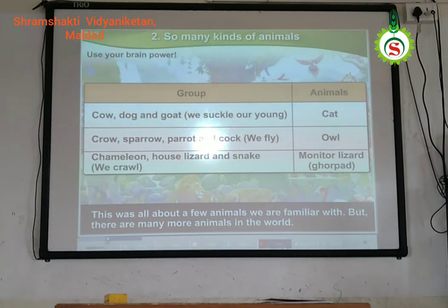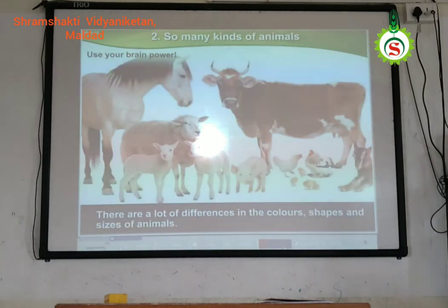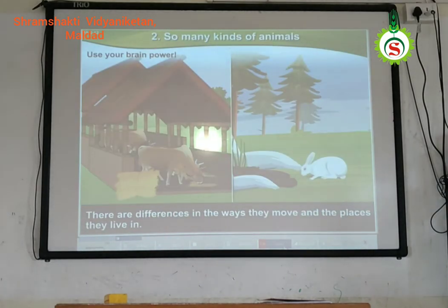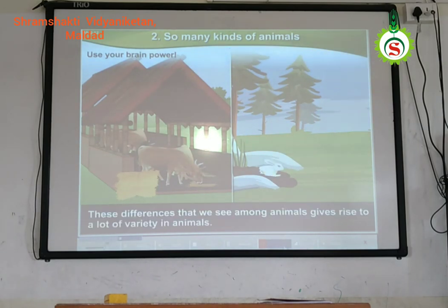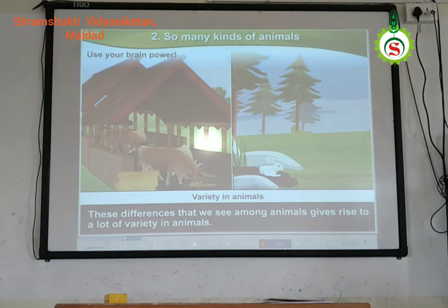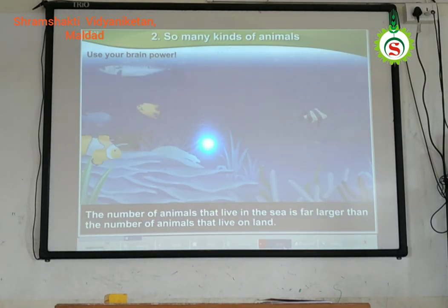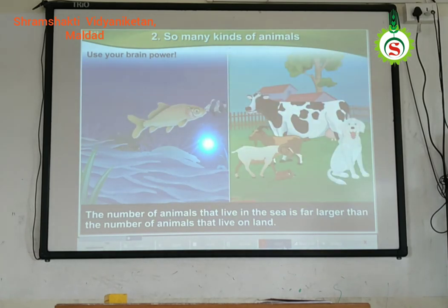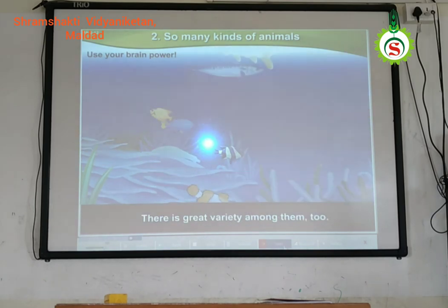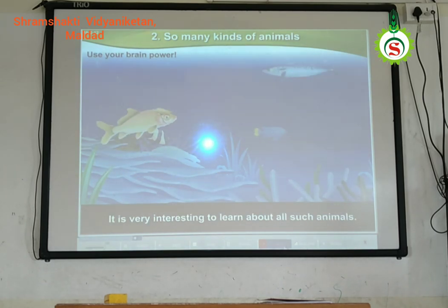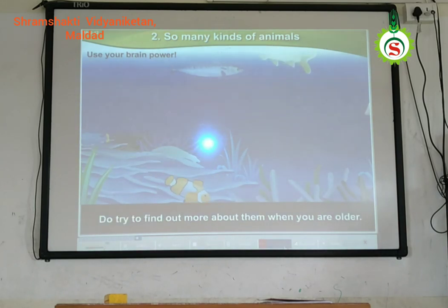This was all about a few animals we are familiar with. But kids, there are many more animals in the world. There are a lot of differences in colors, shapes, and sizes of animals. There are differences in the way they move and the places they live in. The number of animals that live in the sea is far larger than the number that live on land. There is great variety among them too — it is very interesting to learn about all such animals. Do try to find out more about them when you are older.